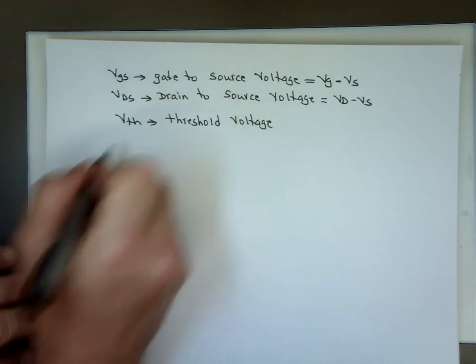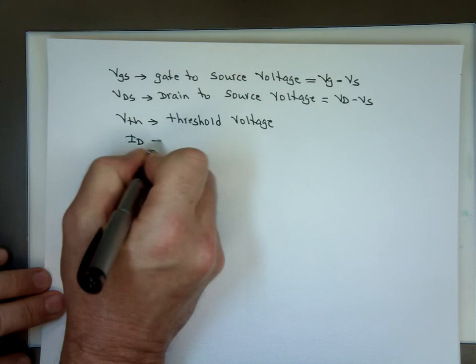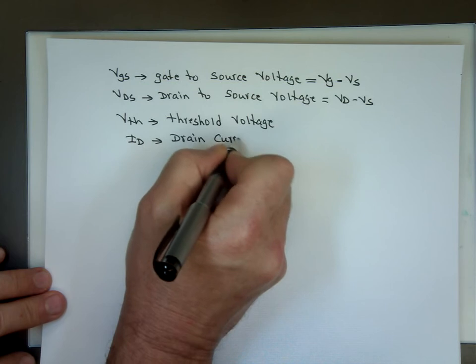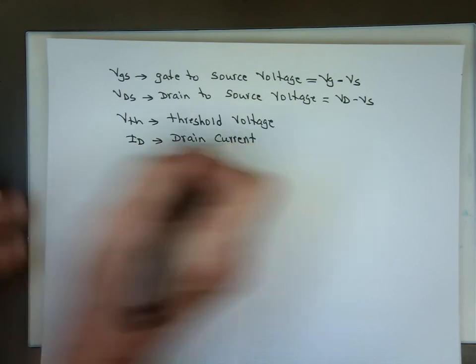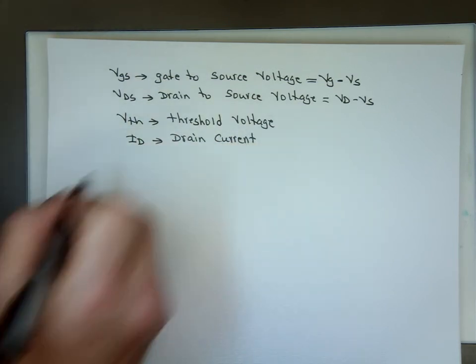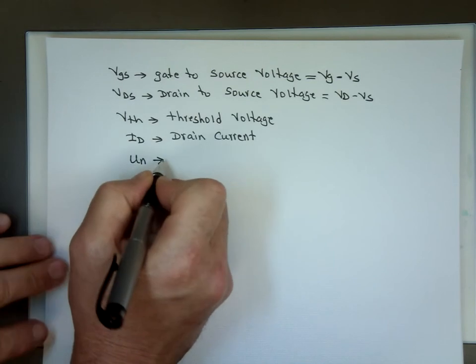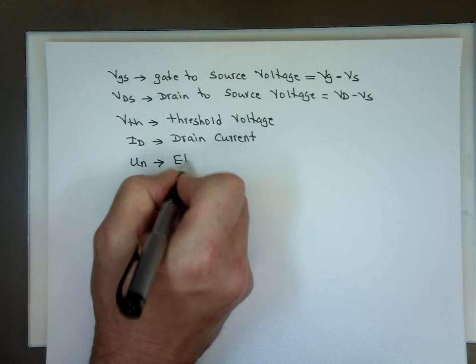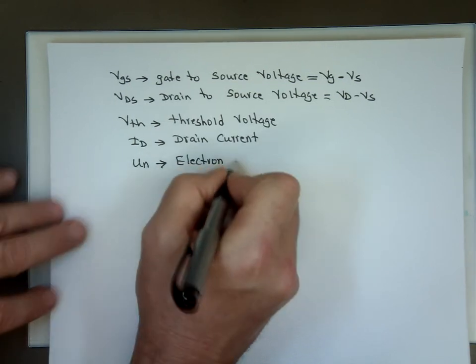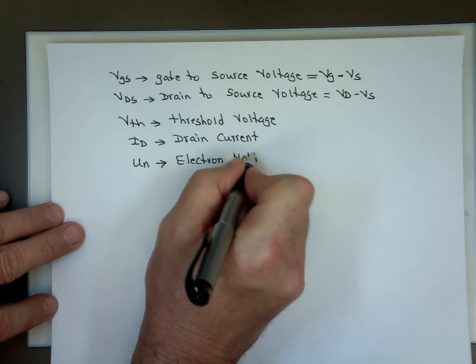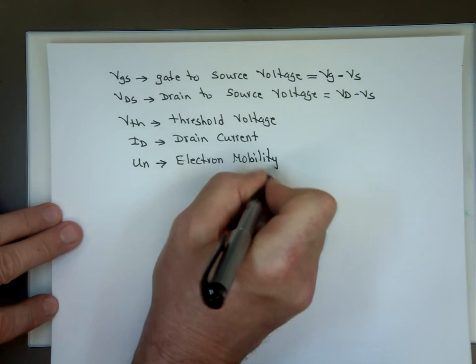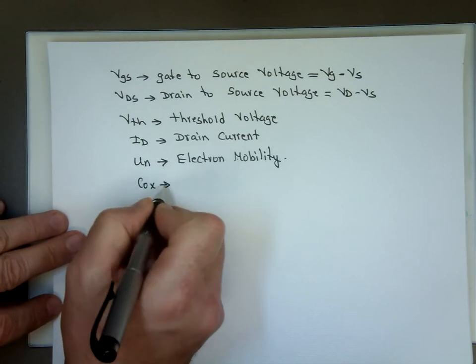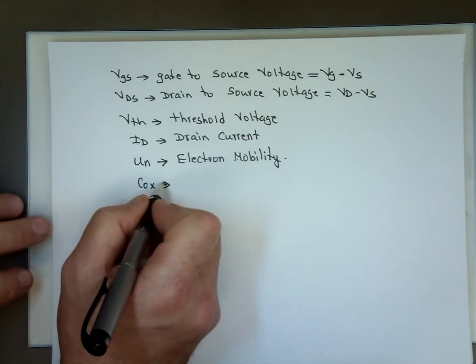VTH, I mentioned that, threshold voltage. ID, drain current. What else on that equation was μn, or μ0, electron mobility. That's a constant.